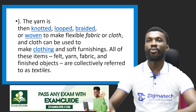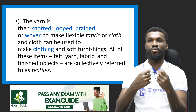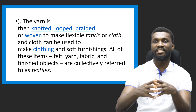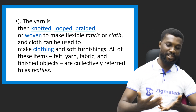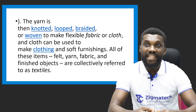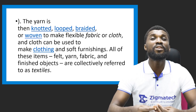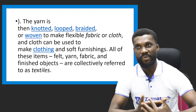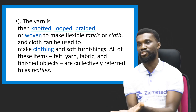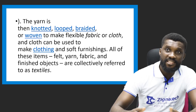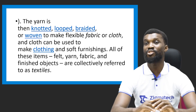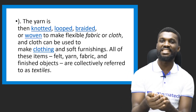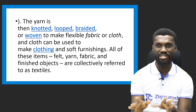The yarn is then knotted, loomed, braided, or woven to make flexible fabric or clothes, and those clothes can be used as clothing — what we wear — and even furniture. All of these items — yarn, fabric, and finished objects — are collectively referred to as textile. Whether you call it fibers, fabrics, or finished objects or decorative media, they all refer to what we call textile.